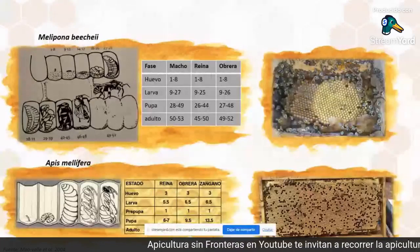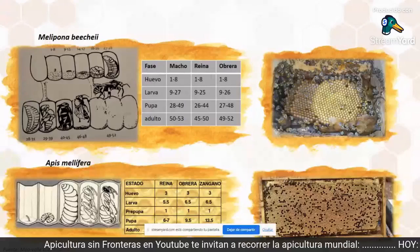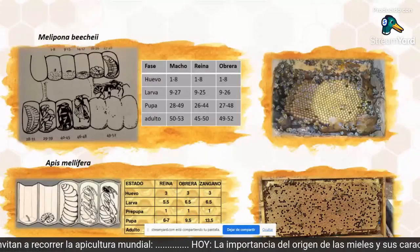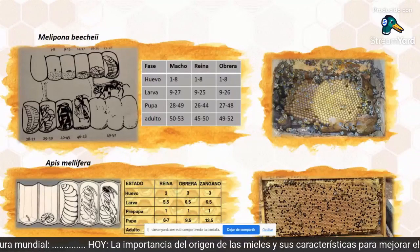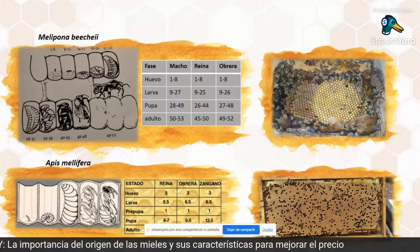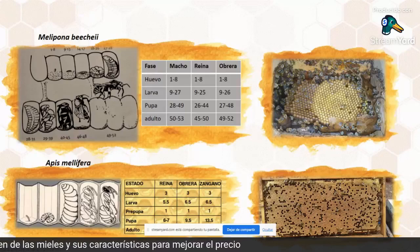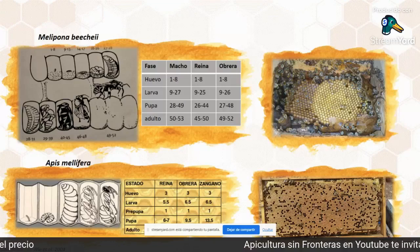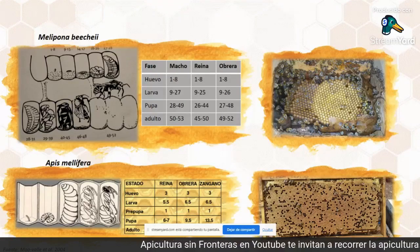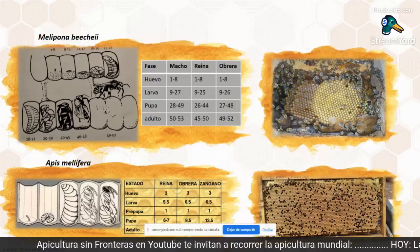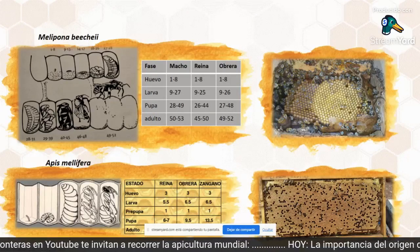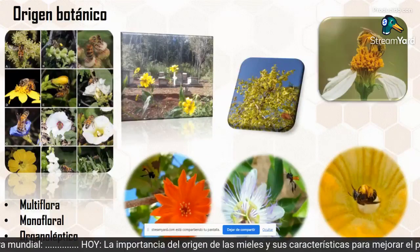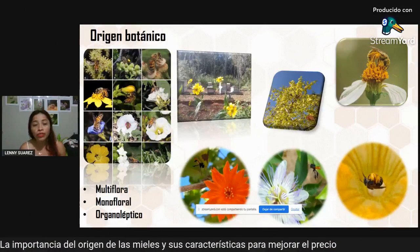We can identify two side images: a meliponino nest on top and an Apis melífera nest below — very different. In the meliponino nest we can see the complete nest with cells that are practically discs stacked on top of each other from top to bottom, in contrast to a frame from an Apis melífera hive, which is practically a square with corresponding comb and different distribution.